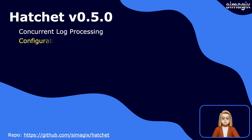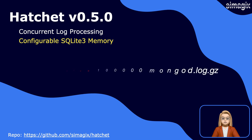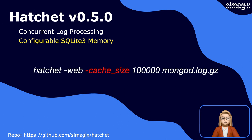We are pleased to announce the addition of the cache_size command line parameter, offering enhanced control over your SQLite database memory allocation. Particularly beneficial for the processing of extensive log volumes, this feature addresses scenarios where the default 2000-page cache may fall short.